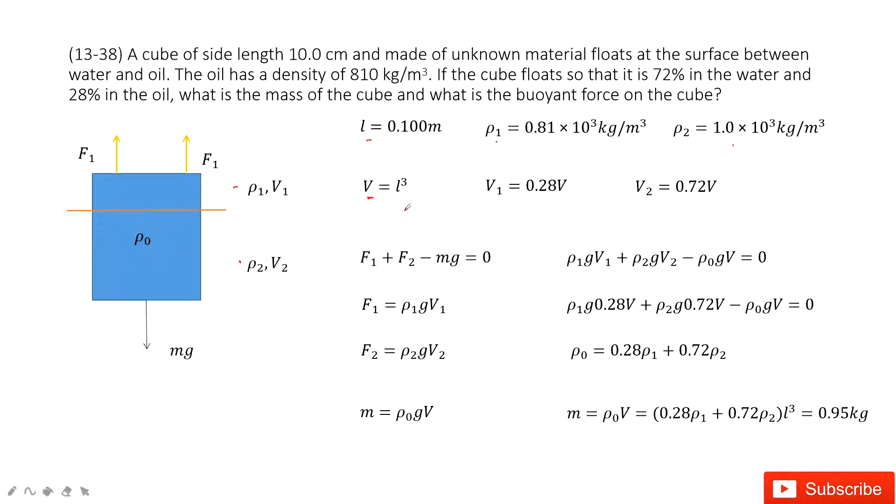Now we need to find the mass of this cube. The volume V is given, so we need to find the density. How can we do that? We consider that this cube is in static equilibrium. The forces must be balanced - the net force is zero.